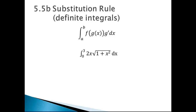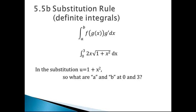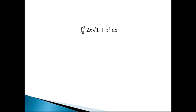So, for example, if I make 1 plus x squared be the u, what then are the a and b, from a to b, from 0 to 3, what is it going to look like? Well, this is the function we're dealing with. If I make 1 plus x squared equal u,